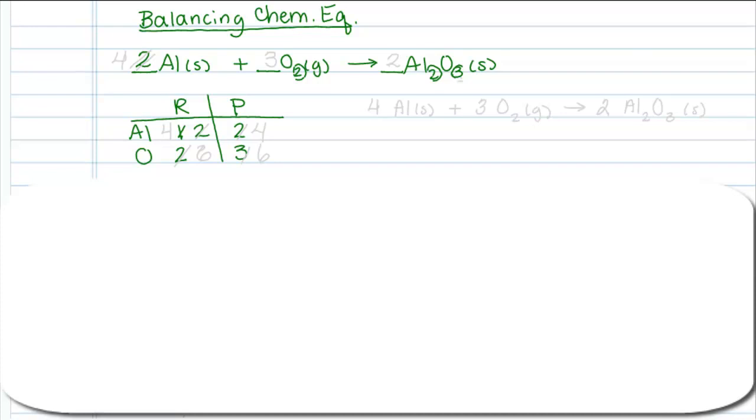Over on the reactant side, I have two and three. This is more difficult because I cannot just add a coefficient to one side. I'm going to have to add them to both. You kind of think of this the way we did lowest common denominators in math class. So the lowest common denominator here would be six. So I would have to have three of these oxygen molecules to get a total of six. And I'd have to have two of the aluminum oxide molecules to get a total of six.